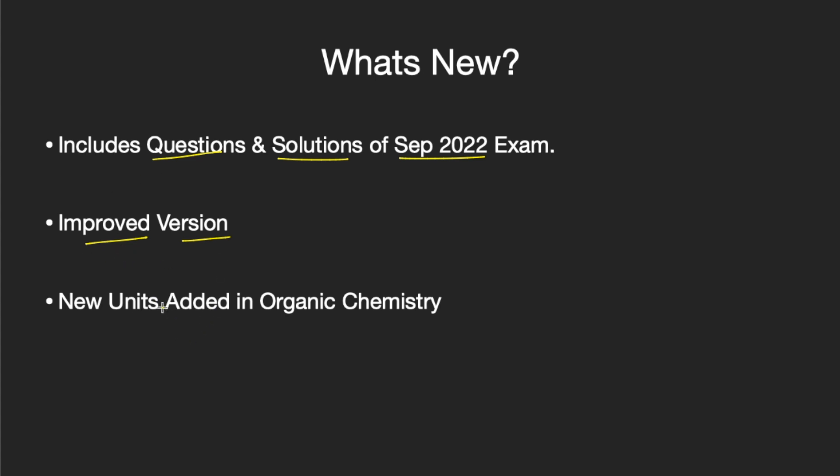We have added new units to organic chemistry. In previous versions, all organic chemistry questions — including reaction mechanism, reagents, and heterocyclic compounds — were included in a single unit. Now we have segregated them into different units, giving you better insight into questions from each specific section.